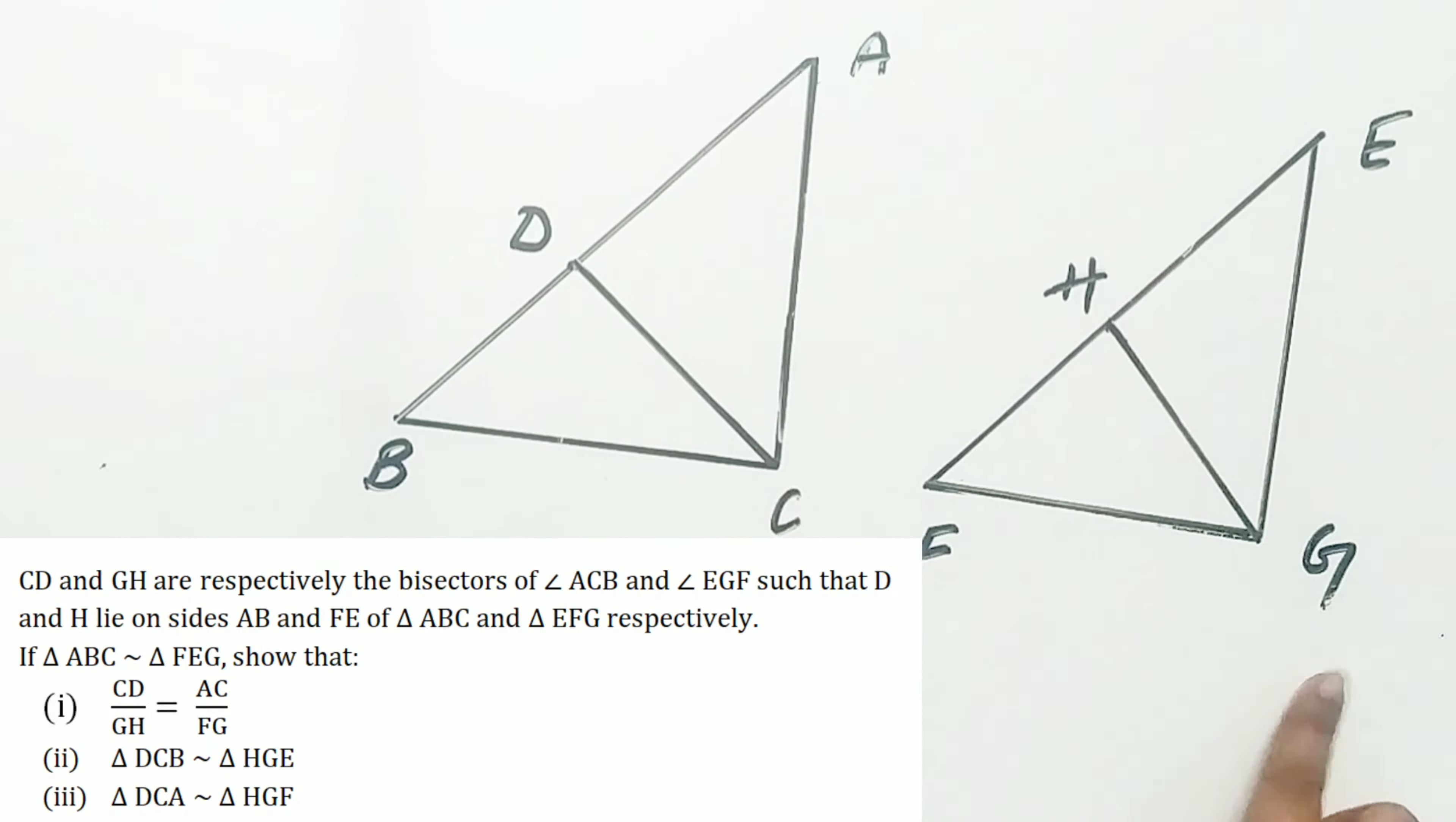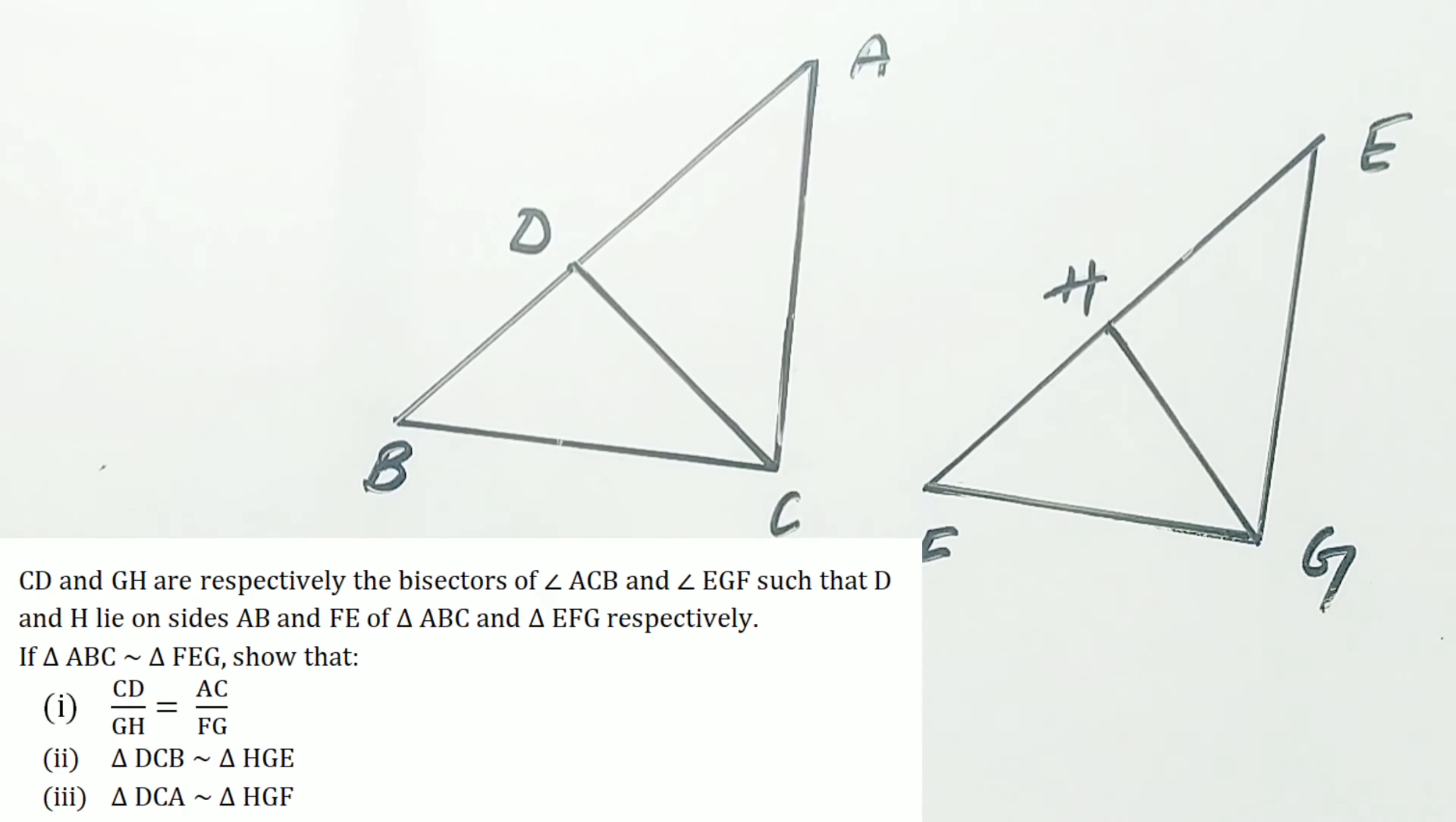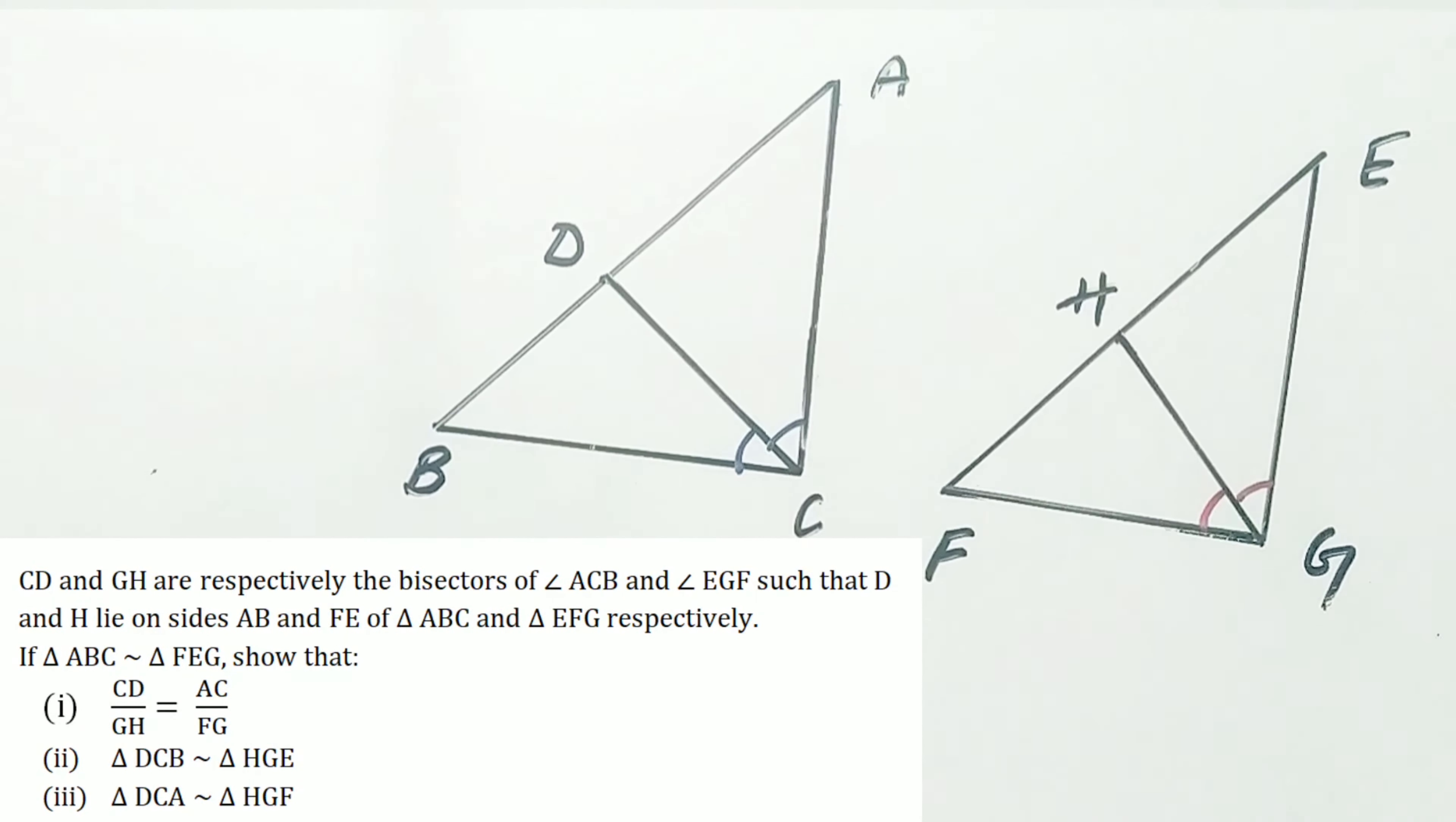CD and GH are respectively the bisectors of angle ACB and angle EGF such that D and H lie on the sides AB and FE of the triangle ABC and EFG respectively.